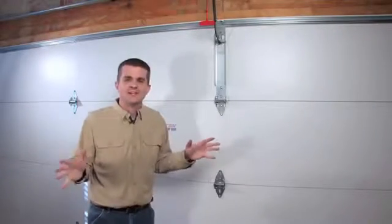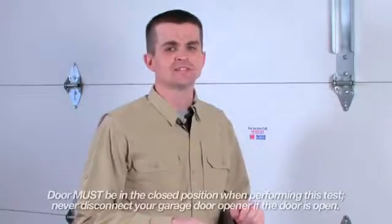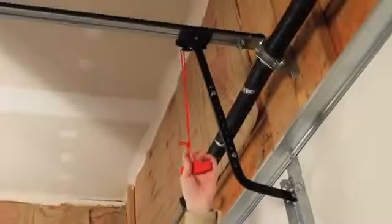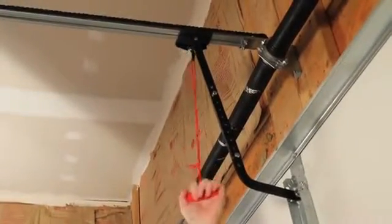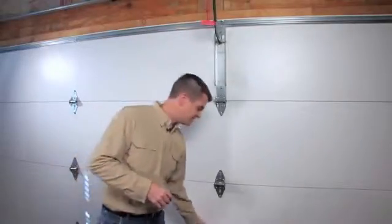Another general inspection that any homeowner can perform is going to be the door balance test. To perform this test, first make sure that the door is in the closed position. Then disconnect the opener from the garage door. Then you want to raise the door about halfway.